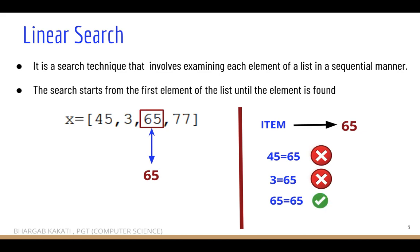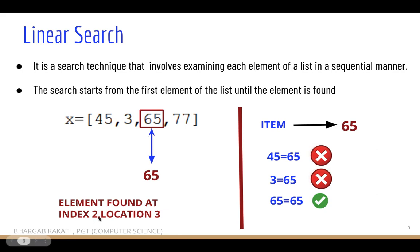Once we find that particular element, we need not search the remaining elements, because we have already found the element that was to be searched. We can declare that the element is found at index 2, location 3. Indexing starts from 0, so 45 has index 0, 3 has index 1, and 65 has index 2. Location uses natural counting — first, second, third — so the element is found at location 3 and index 2.